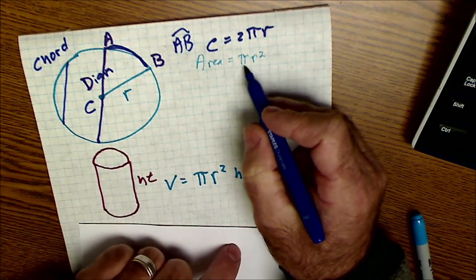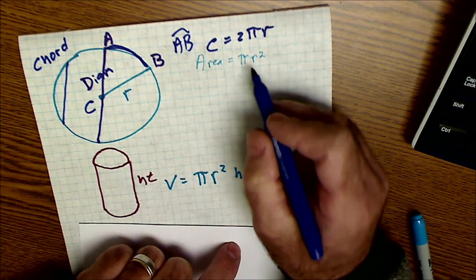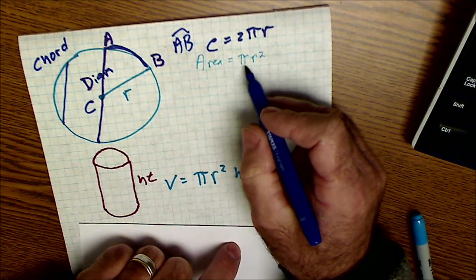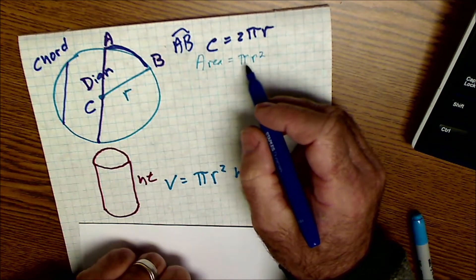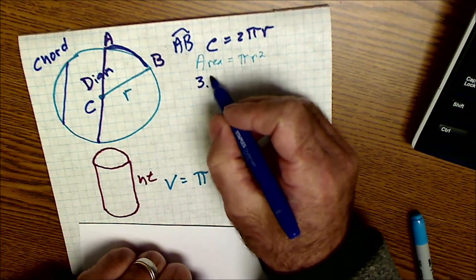Pi is just a number — it's a ratio of circumference divided by diameter, and it's approximated with the number 3.14. Circumference, which is all the way around the outside, is equal to 2πr or diameter times pi. Area, which is how much is inside the circle, is πr².